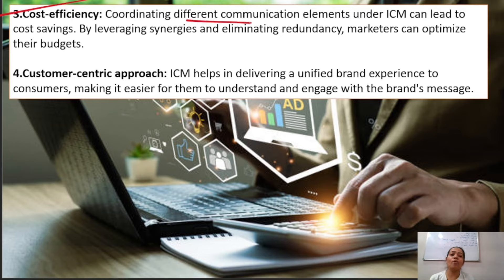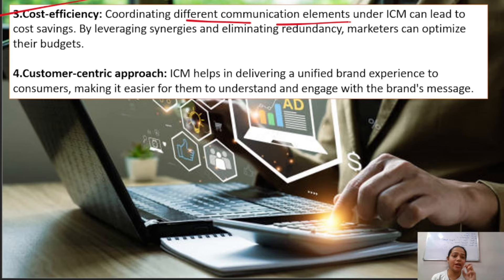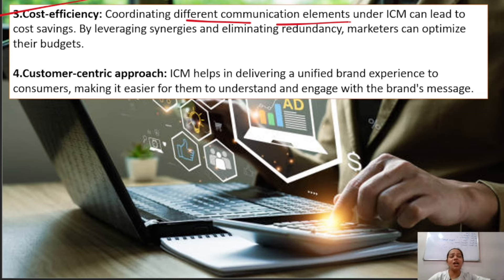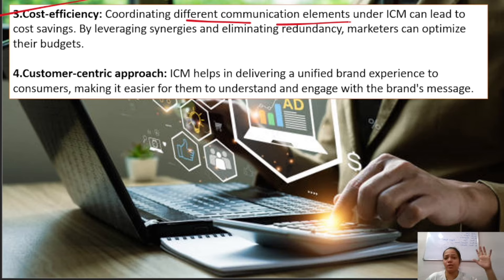Next is cost efficiency. When you have different communication elements coordinated together, you can save costs. Rather than making one large investment in a single source — for example, if people are not watching TV and you invest a lot in TV ads — a better approach is to distribute your budget strategically across multiple platforms. By targeting different platforms where your audience actually is, you can achieve better results with a smarter, more efficient budget allocation.